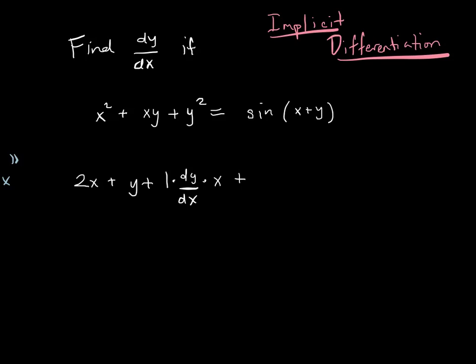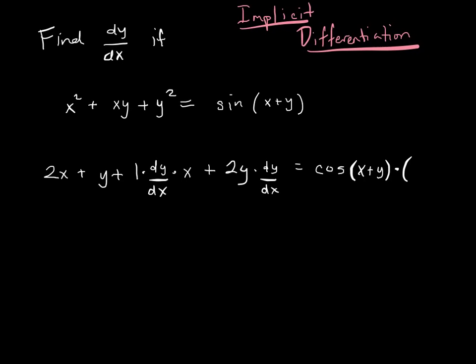I've got the end of the product rule, which gives the other function x. Next case: derivative of y². Well, it's 2y, except I took a derivative involving a y, which means I've got to multiply by dy/dx. On the other side of the equals, we're going to have a chain rule, because there's a messiness inside of sine. That means the first bit is going to be cosine of all the messiness times the derivative of the messiness, which is 1 plus dy/dx.